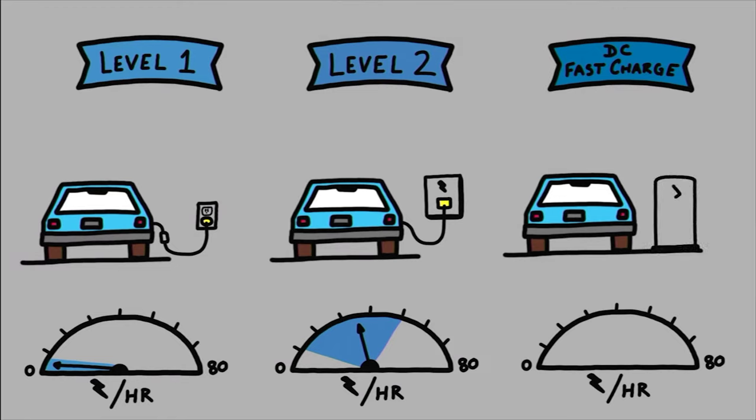DC fast charge stations provide the quickest charge, adding about 60 to 80 miles of range in 20 minutes. DC fast charging is usually located in high-traffic public spots and along highway corridors.